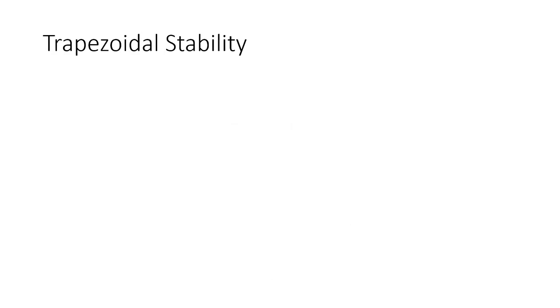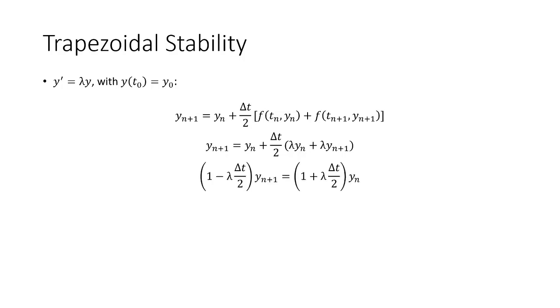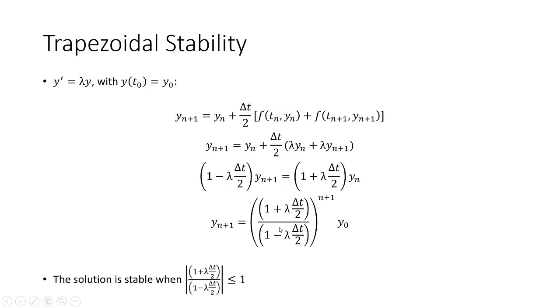So finally, the trapezoidal method stability is slightly more complex. Since we're going to have a Y sub N and a Y sub N plus 1 term on the right. If we rearrange this, bringing Y sub N plus 1 to the left and Y of N on the right, we have the following coefficients. And then we'll divide through over to the right side and make that substitution with Y naught again. And we get the following. So now it's this fraction here that has to be less than or equal to 1. So that's going to be our stability condition for the trapezoidal method. The absolute value of this quotient has to be less than or equal to 1.